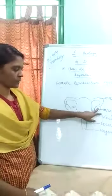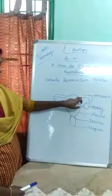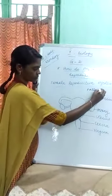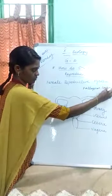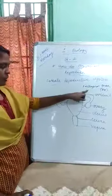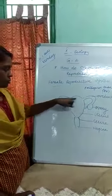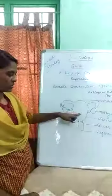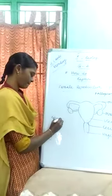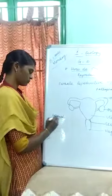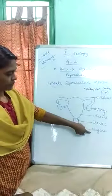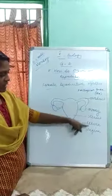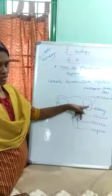The oval-shaped structure is called the ovary. The tube-like structure is called the oviduct, otherwise known as the fallopian tube. Then the cervix, then the vagina. So the labels of the female reproductive system are: ovary, oviduct, uterus, cervix, and vagina.